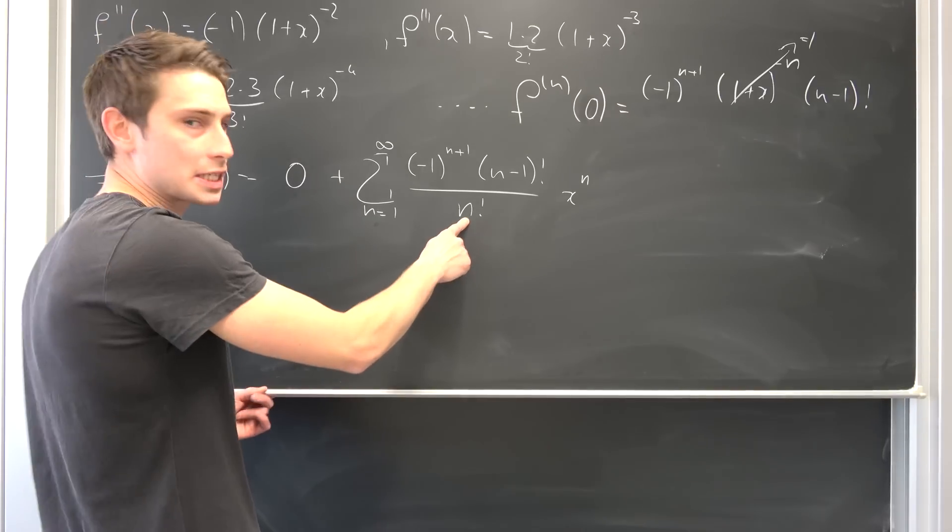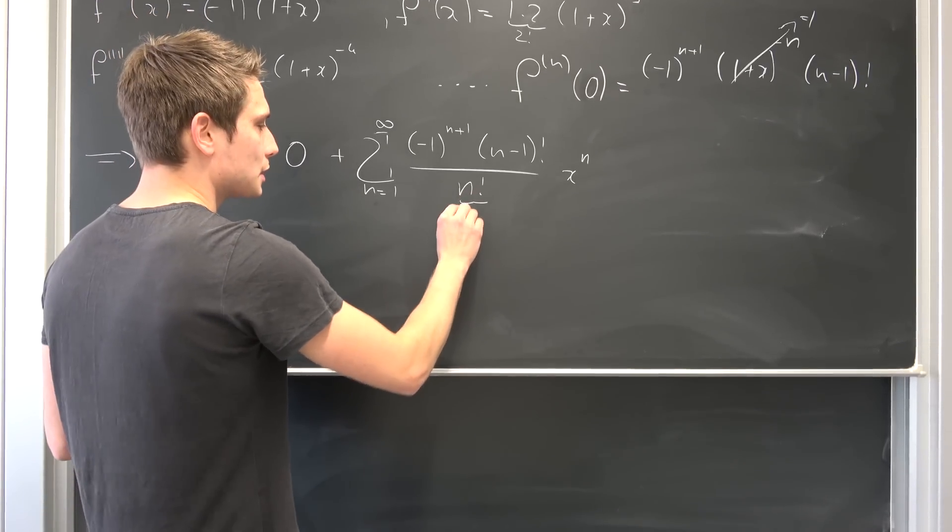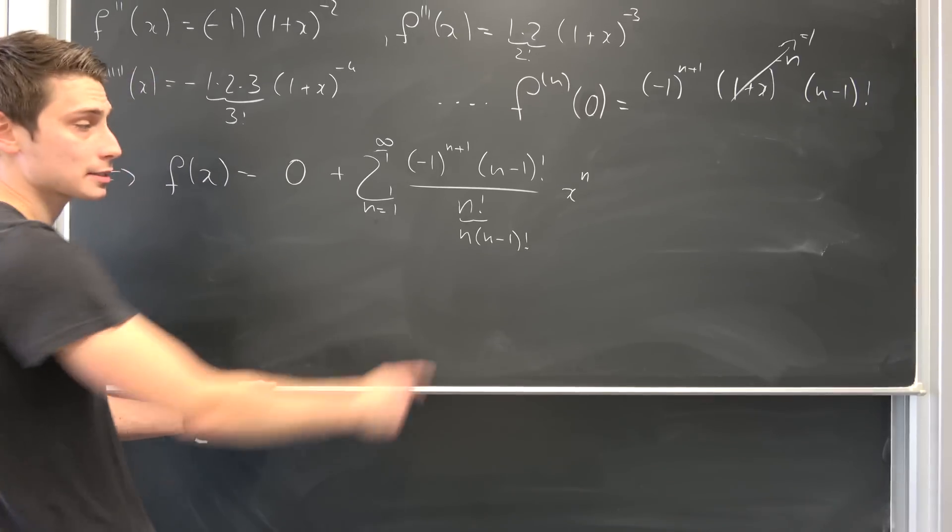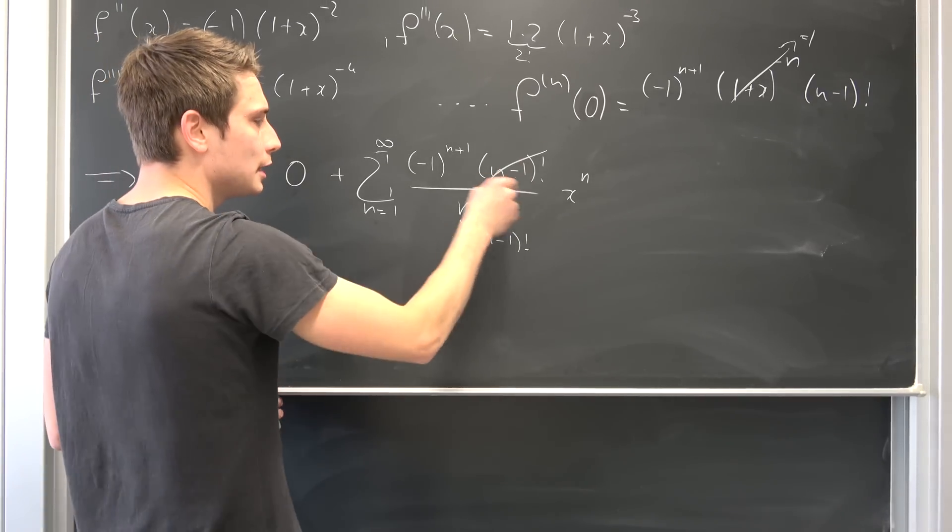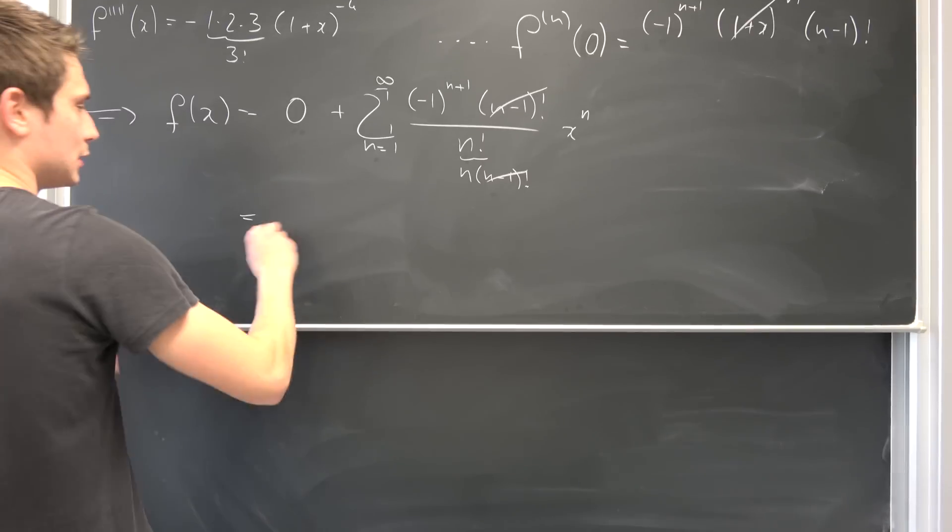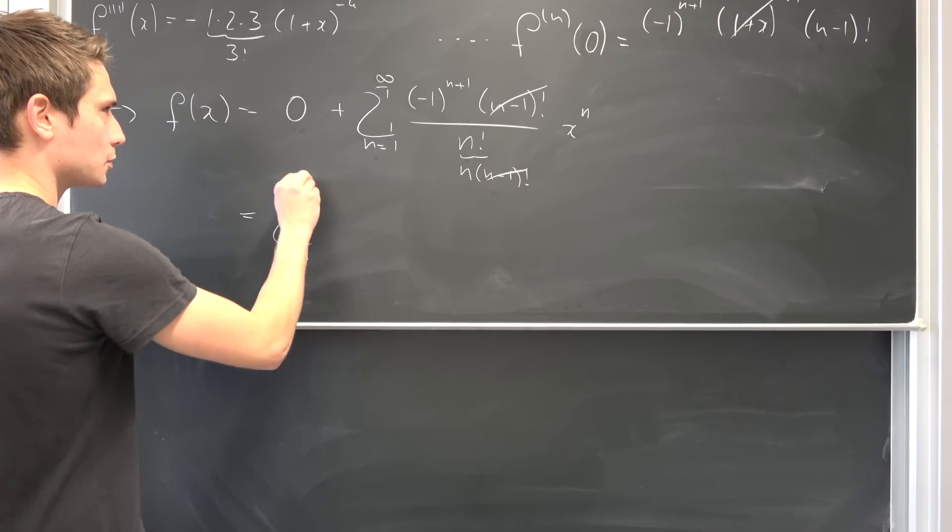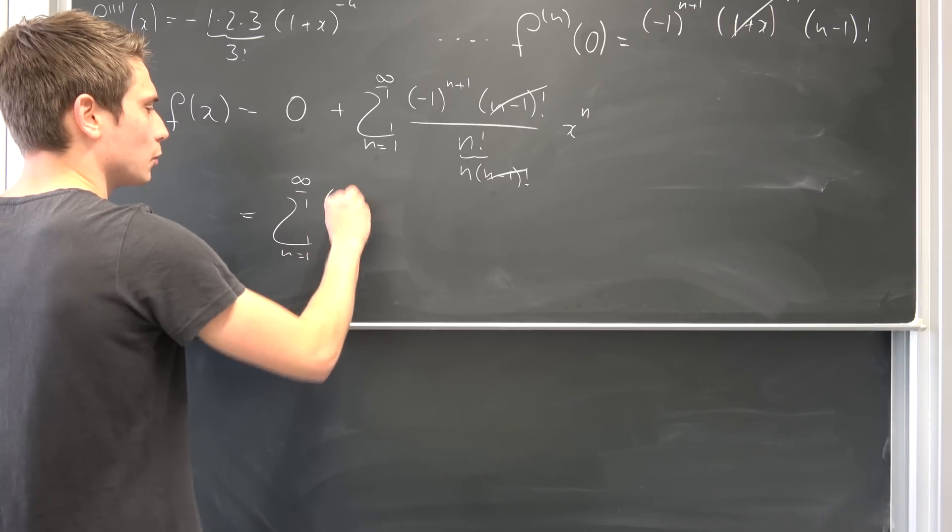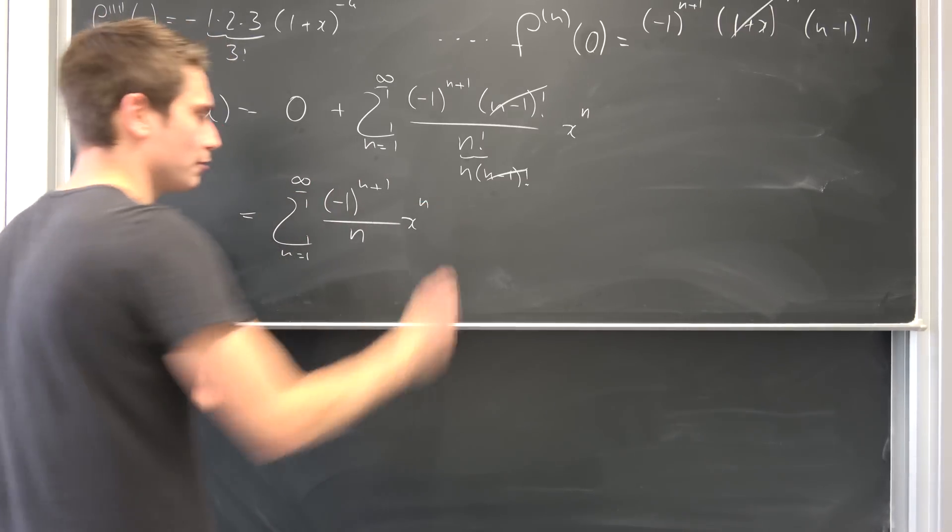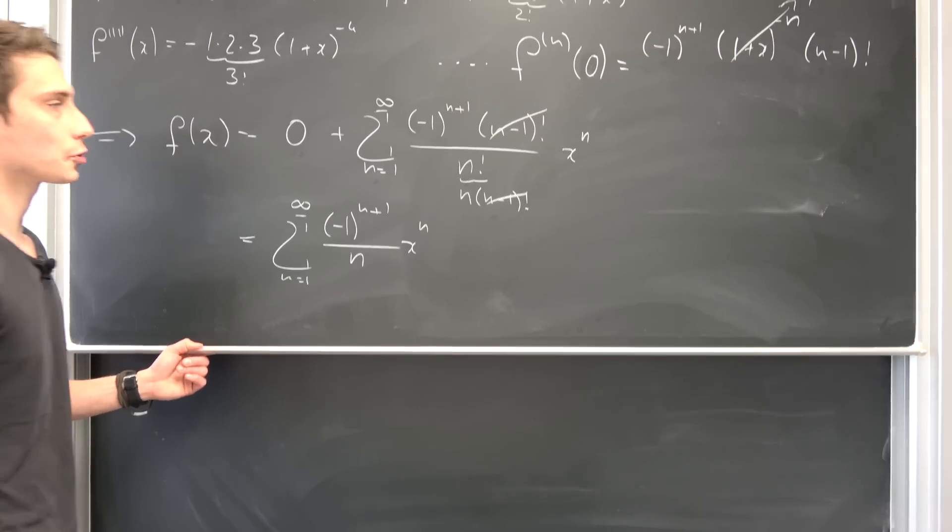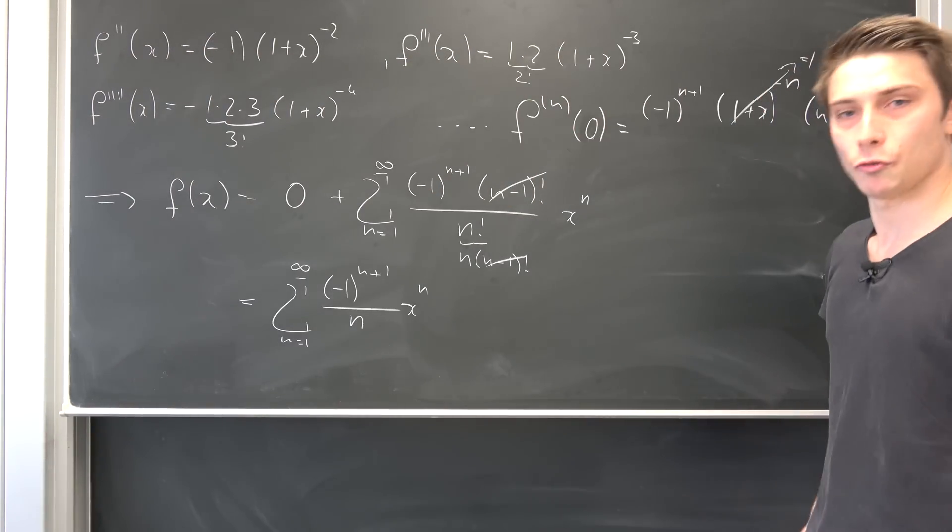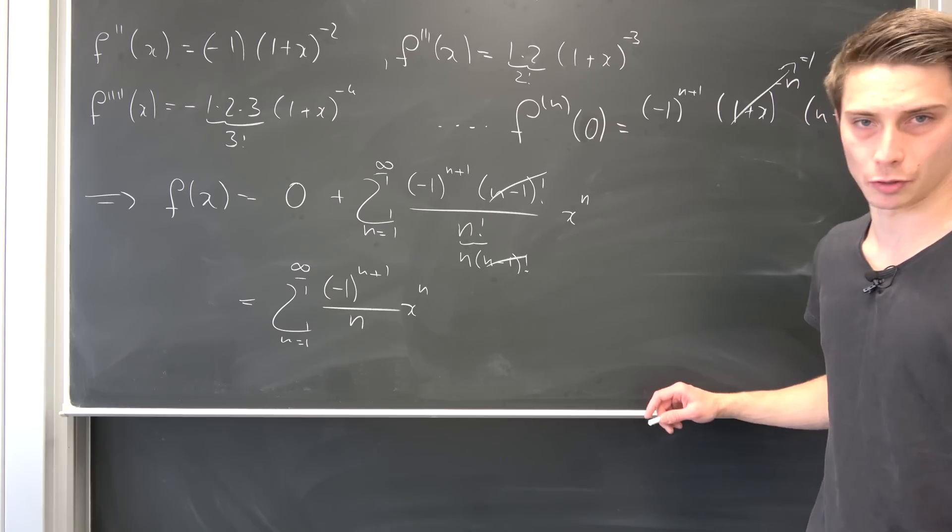Times x to the nth power. The cool thing is, what is n factorial? n factorial is nothing but n times n minus 1 factorial. Meaning this and that is going to cancel out. And what we get is, let's get rid of the 0, then we get sum running from 1 to infinity of negative 1 to the n plus 1 power over n times x to the nth power. And this should be our Maclaurin series expansion for our natural log of 1 plus x.